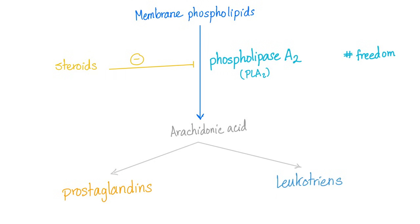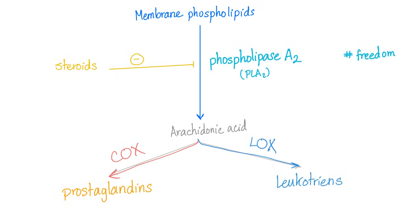Here are the membrane phospholipids, which are part of the lipid bilayer plasma membrane. Phospholipase A2 will free the arachidonic acid from the membrane phospholipids. Then we have two pathways: the prostaglandins pathway and the leukotrienes pathway. The enzyme that converts arachidonic acid into prostaglandins is cyclooxygenase. The enzyme that sends it toward leukotrienes is lipoxygenase.